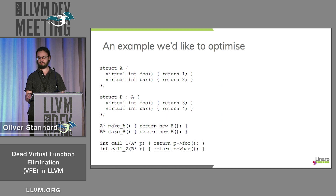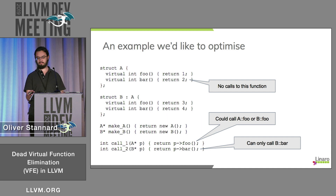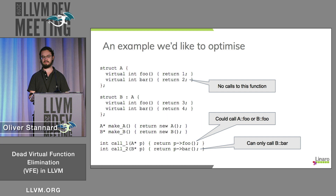The first call is through a pointer of type A, the base class, so at runtime that could go to either of the implementations of Foo. But the second call is through a pointer of type B, so we know it must go to B's implementation of Bar. This means A's implementation of Bar can't be called from anywhere, and we'd like to be able to remove that.